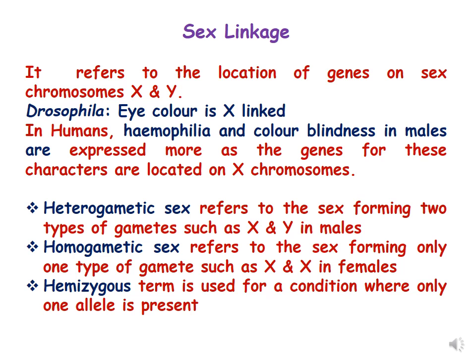Heterogametic sex refers to a sex forming two types of gametes, such as X and Y in males. Homogametic sex refers to a sex forming only one type of gamete, such as X and X in females.